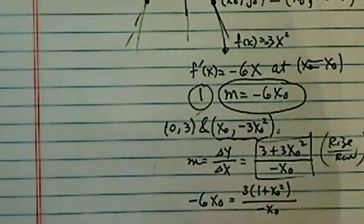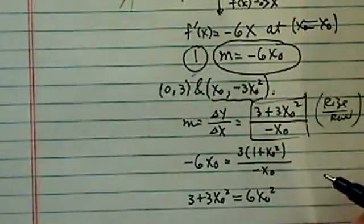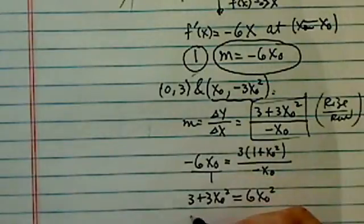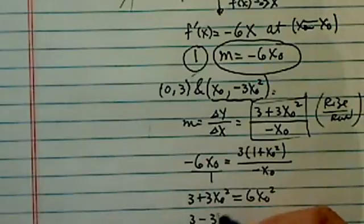So, I have a 3, it doesn't really matter, let's put it back in there, times equal to 6x0 squared. All I did is cross-multiply, basically. This one translated in 3 minus 3x0 squared is equal to 0.